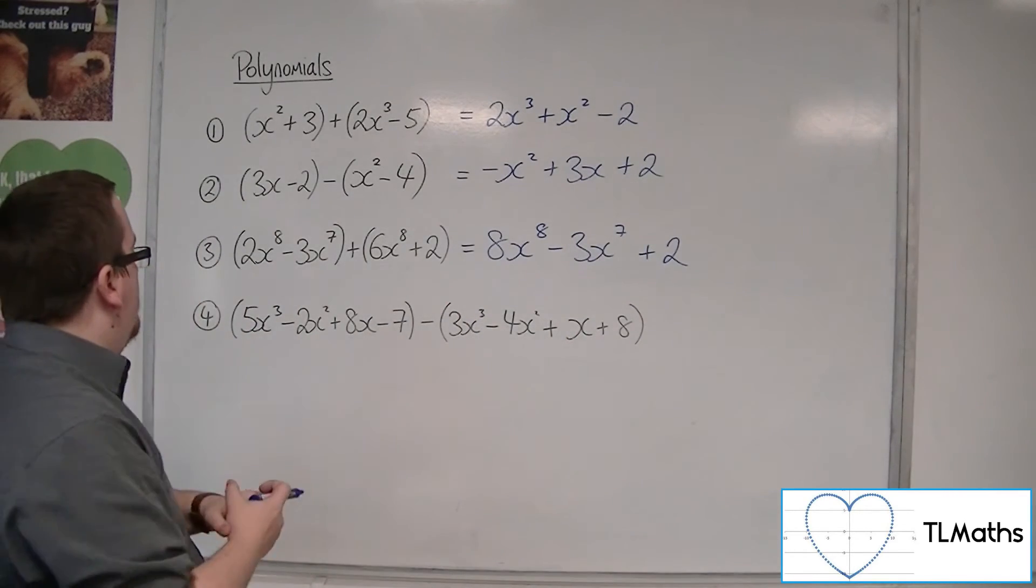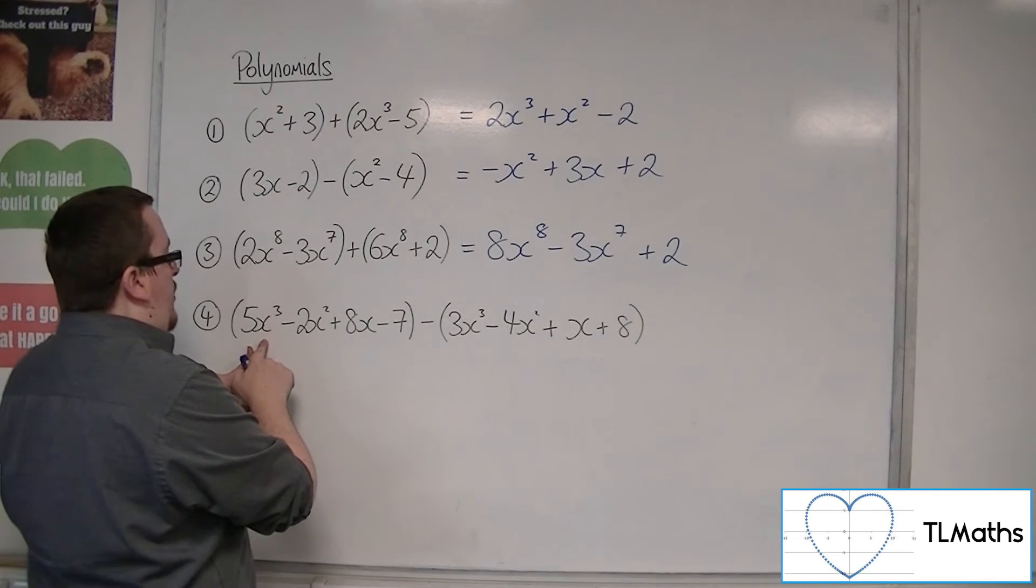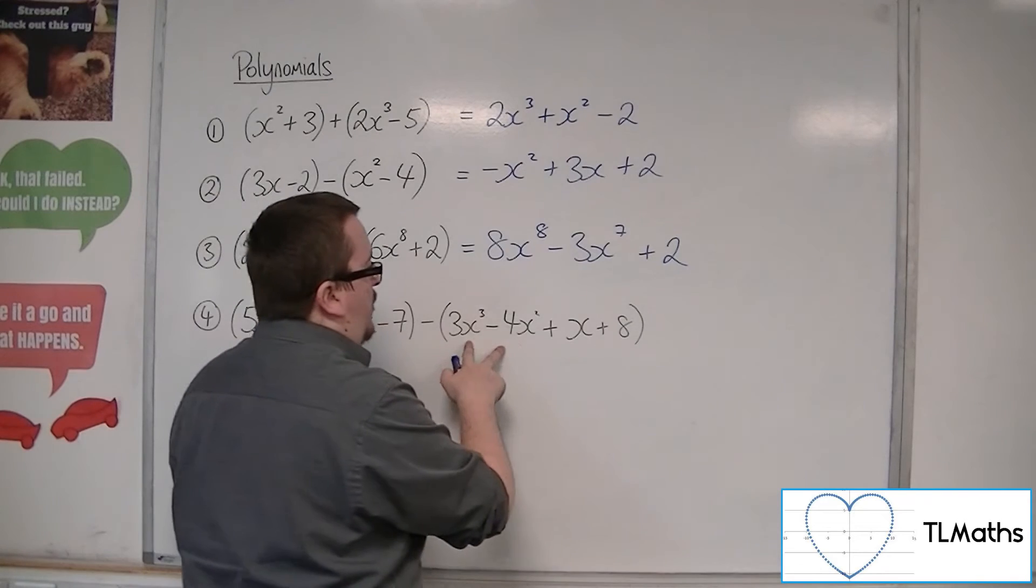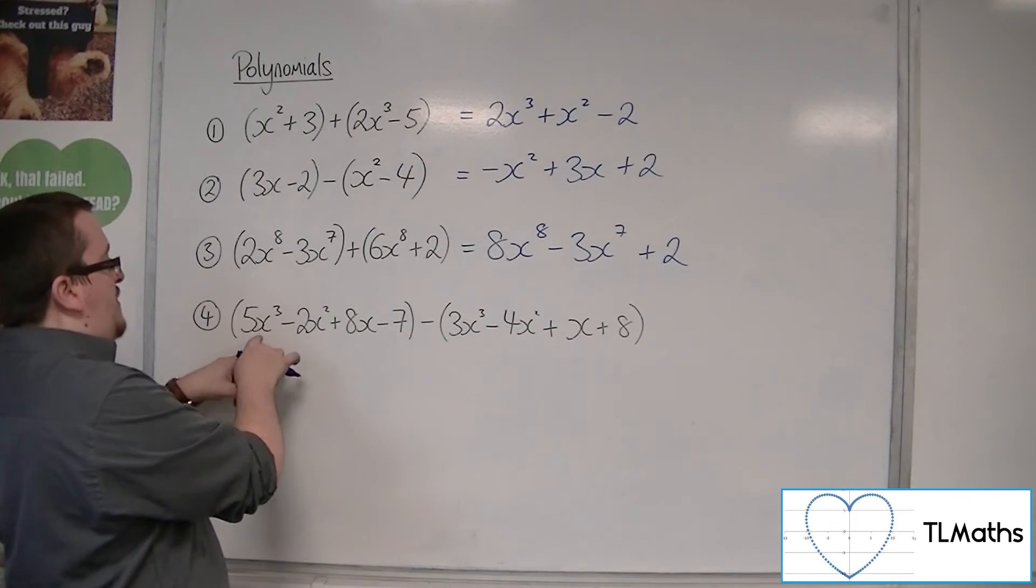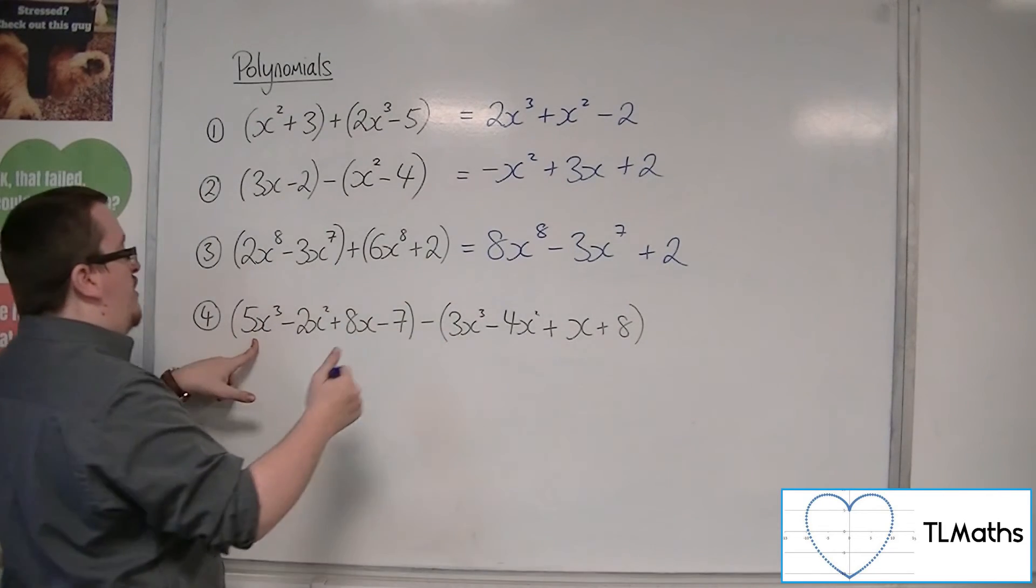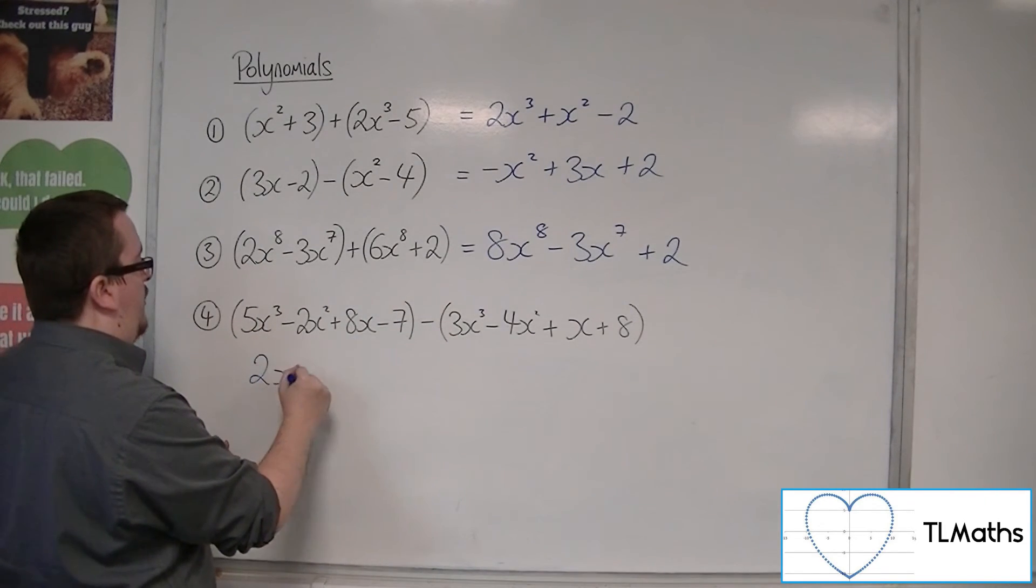Then finally, we've got 5x cubed, take away 2x squared plus 8x minus 7, take away 3x cubed minus 4x squared plus x plus 8. So first of all, the cubes. So 5x cubed, take away 3x cubed, we'll make 2x cubed.